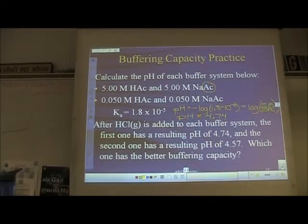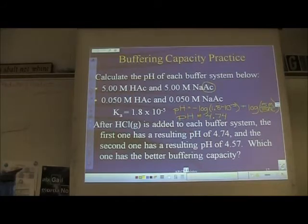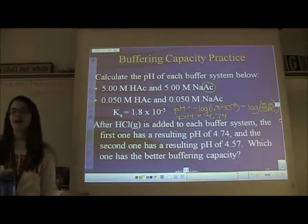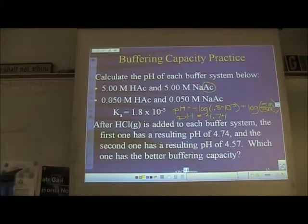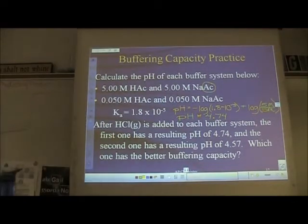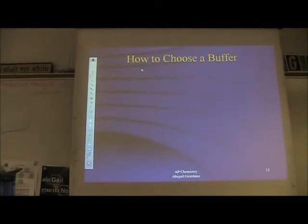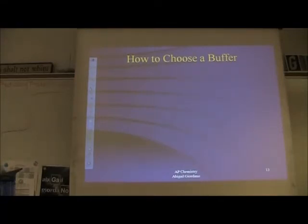Buffer number one has the better buffering capacity because it has greater molarities. You can't evaluate a single buffer in isolation — you need two to compare. This buffer is 'buffer' than that buffer. My husband is from Massachusetts, so he drops the R and says 'buffa' — it's a buffer.